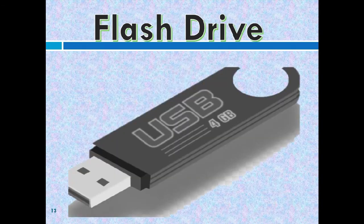Next, we have here the flash drive. When we need to bring our saved data to other places, we can use a flash drive. We can easily bring it around because it is light and small. We normally don't carry a hard disk around because it is very delicate. A flash drive is also called a USB drive or a thumb drive because it is about the size of a human thumb.